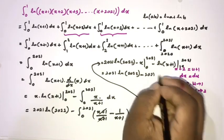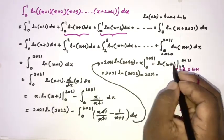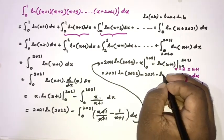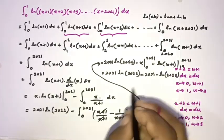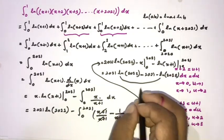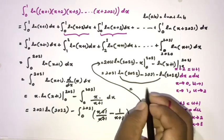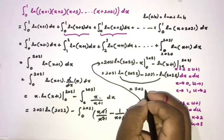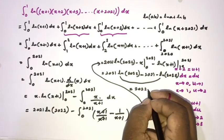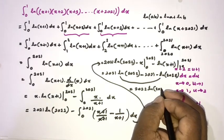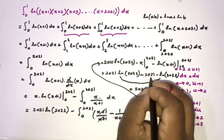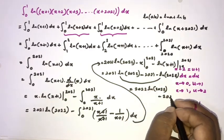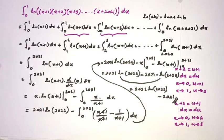Applying the limits: we get 2021·ln(2022), then subtracting [2021 - ln(2022)]. Combining the ln(2022) terms: 2021·ln(2022) + ln(2022) = 2022·ln(2022). So the final answer is 2022·ln(2022) minus 2021.